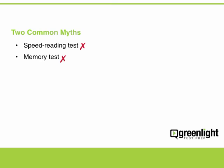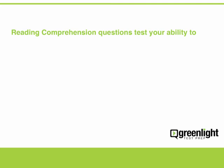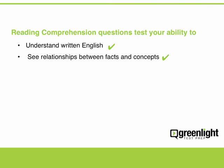So, if reading comprehension questions are not designed to test speed reading skills and memory, what are they testing? Well, to begin, reading comprehension questions are designed to test your ability to understand written English. This does not mean you'll be asked to define specific words and terms. Instead, you'll be asked questions that test your understanding of the overall meaning of a passage. Reading comprehension questions also test your ability to see the logical relationships between facts and concepts. For example, you may be asked to evaluate the relative importance of certain premises within a passage. Finally, reading comprehension questions test your ability to draw inferences — you must be able to determine what conclusions can be drawn from the information presented in the passage.